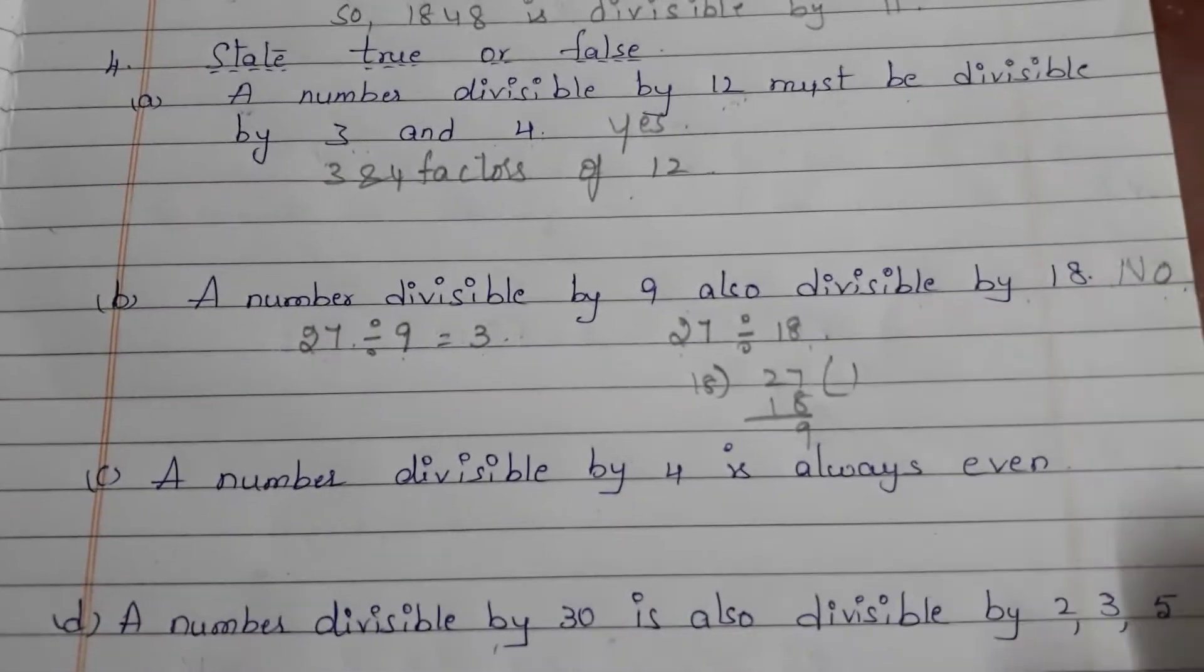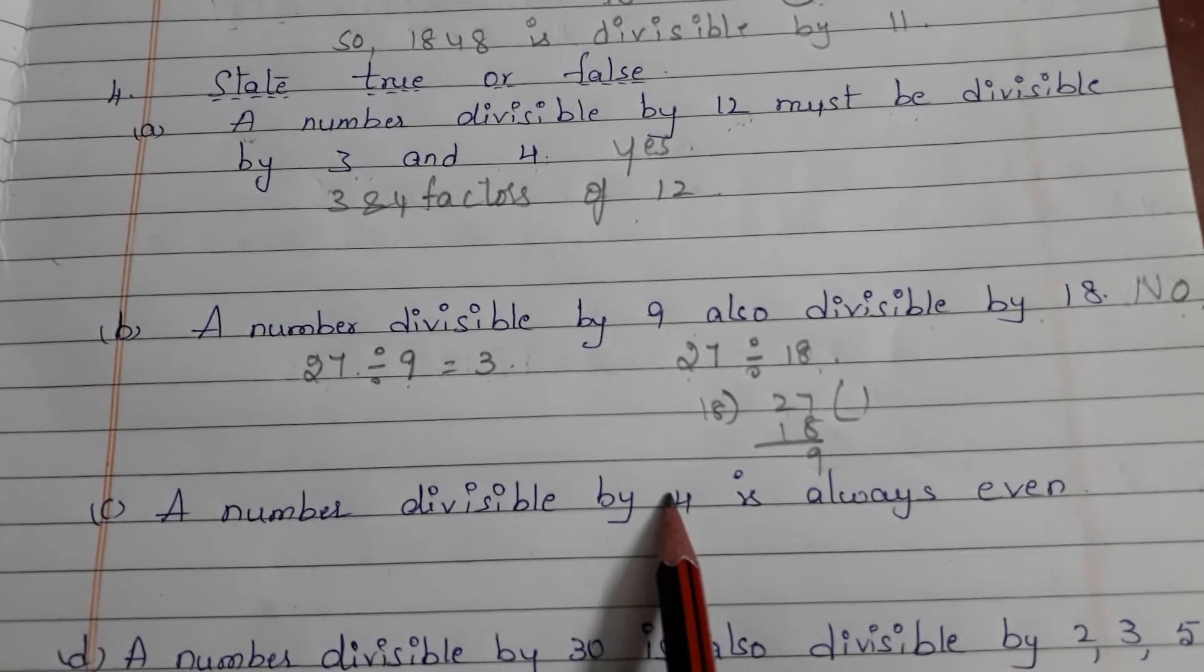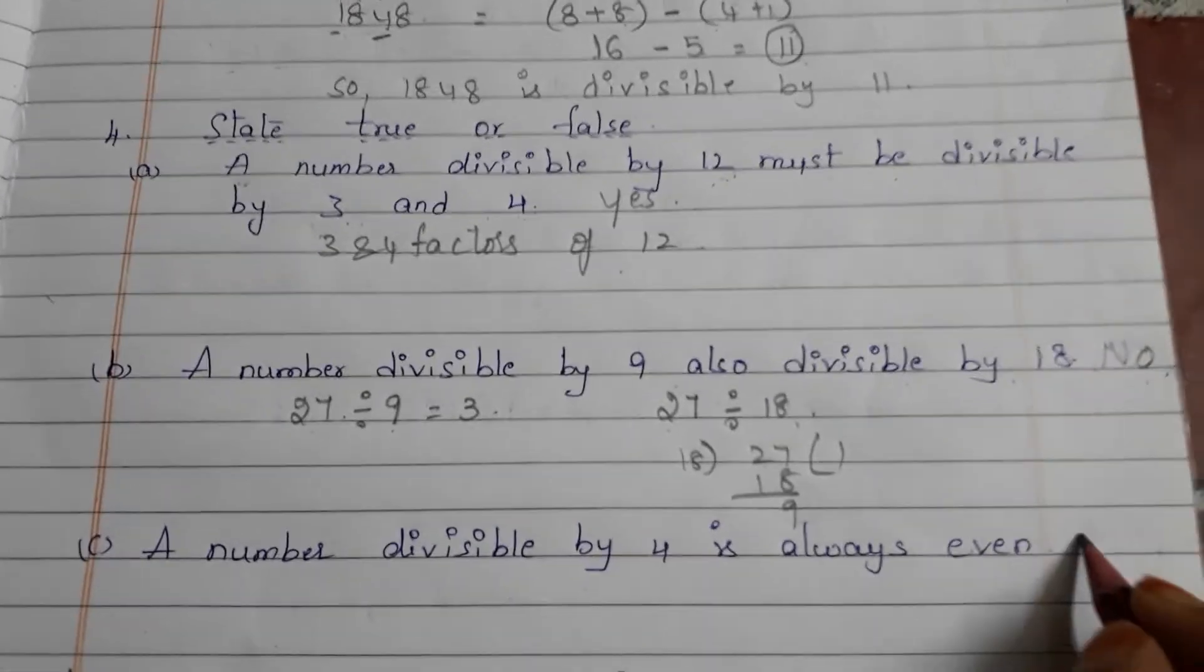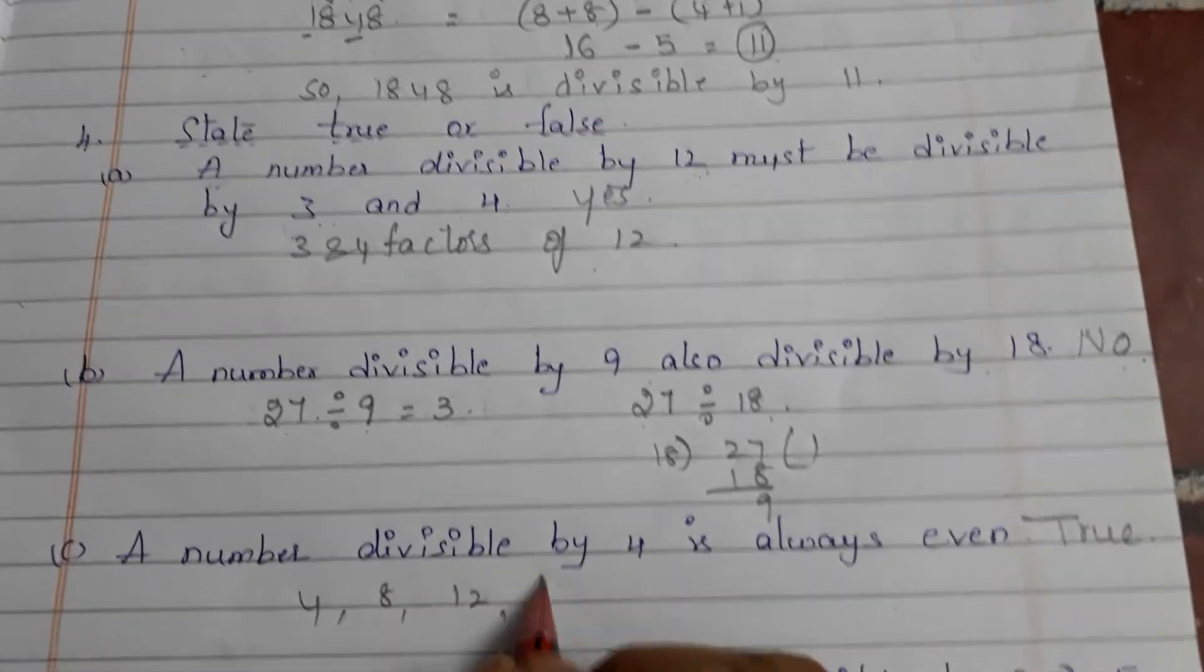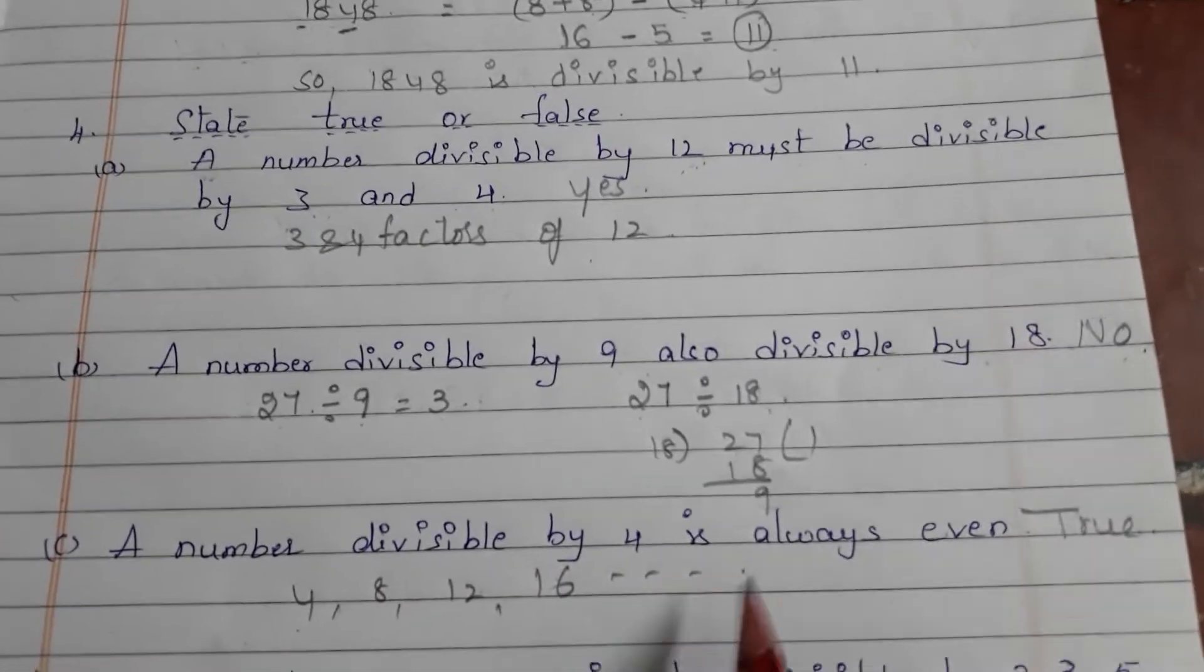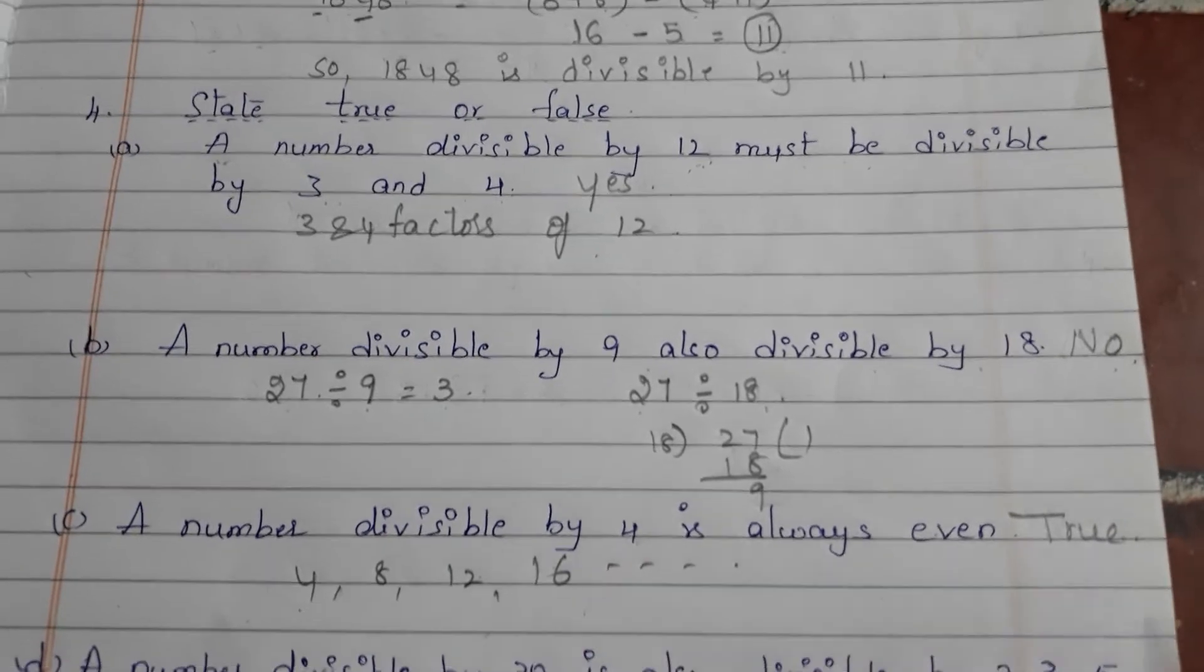Next: a number divisible by 4 is always even. Yes, true. Observe: 4, 8, 12, 16. These are all even numbers and divisible by 4. So a number must be even when it is divisible by 4.